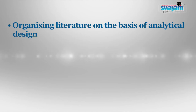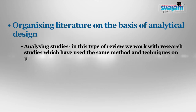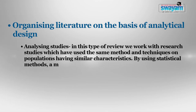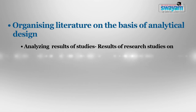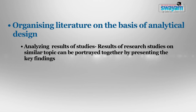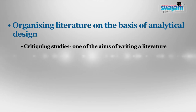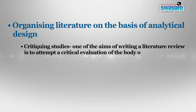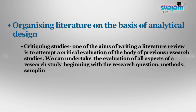Organising literature on the basis of analytical design: Analyzing studies — in this type of review, we work with research studies which have the same method and techniques on populations having similar characteristics, and by using statistical methods a meta-analysis of the cumulative data can be produced. Analyzing results of studies — results of research studies on similar topics can be portrayed together by presenting the key findings of each study and highlighting similarities and differences. Critiquing studies — one of the aims of writing a literature review is to attempt a critical evaluation of the body of previous studies, undertaking evaluation of all aspects beginning with the research question, methods, sampling techniques, statistical techniques and findings. Organising literature on the basis of different sections of a research publication: the literature is discussed sequentially according to the format of the papers.